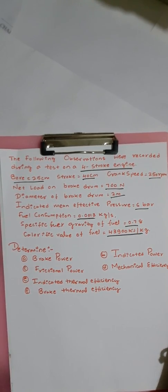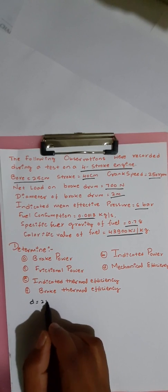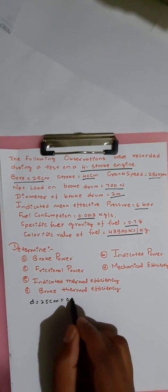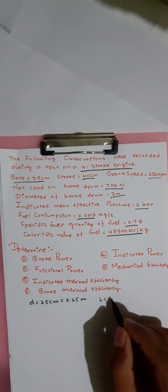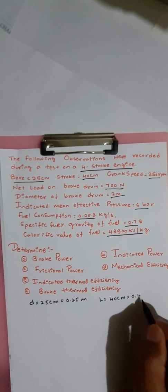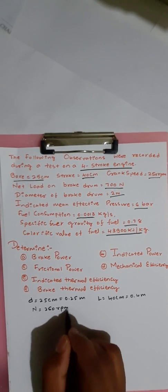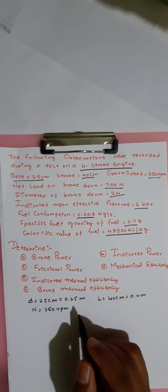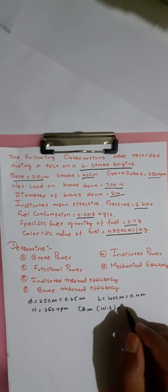First let us note the given data. D (bore) is equal to 25 centimeter, that is 0.25 meter. L (stroke) is equal to 40 centimeter, that is 0.4 meter. The crank speed N is equal to 250 RPM. The net load on the brake drum, W minus S, is equal to 700 newtons.